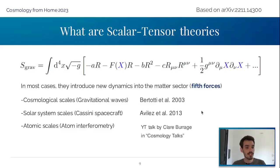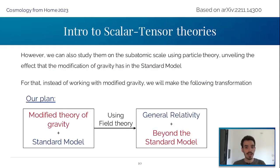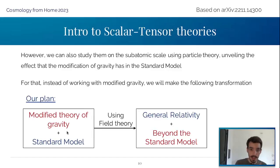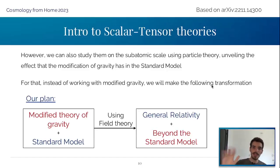We decided to go one step beyond and study these theories at the subatomic scale — using particle theory to unveil the effects that the modification of gravity will have on the standard model, and using quantum field theory techniques to see if they are consistent. To do this, we need to forget about gravity in a sense, because we are used to working with beyond-standard-model theories. The plan is: starting from a modified theory of gravity plus the standard model, using field redefinitions, we end with general relativity and a beyond-standard-model theory, so we can ignore general relativity as usual.